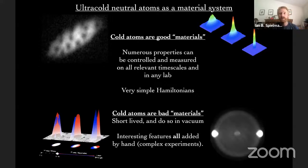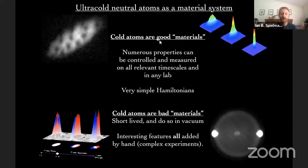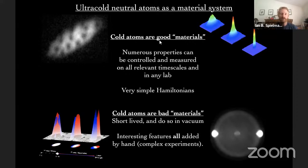I'm thinking of cold atoms as predominantly a many-body or condensed matter kind of system, and I'd like to organize my thoughts around them as being a kind of material — they are chunks of stuff. They're great materials because, as an experimentalist, many of their properties can be controlled in the laboratory on dynamical timescales. By contrast with a quantum Hall system where you go to your grower to get a new crystal, with cold atoms you just change the intensity of an optical lattice — instantaneously or slowly — thereby addressing both the adiabatic and instantaneous approximations from quantum mechanics.